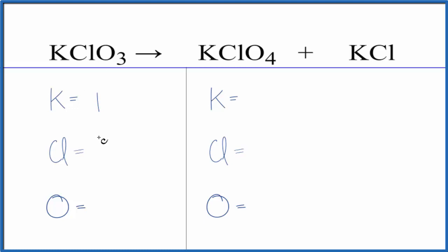One potassium, one chlorine, and three oxygen atoms. Product side, one potassium. Don't forget this here. It's another one that gives us two potassiums. We have one chlorine plus the one chlorine here gives us two and then four oxygens.